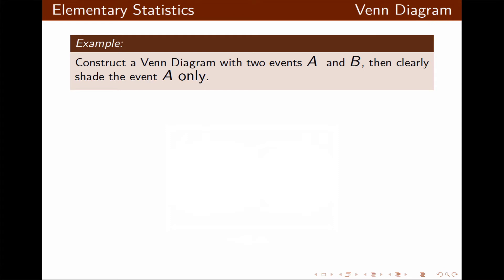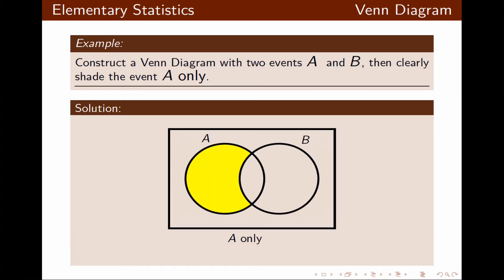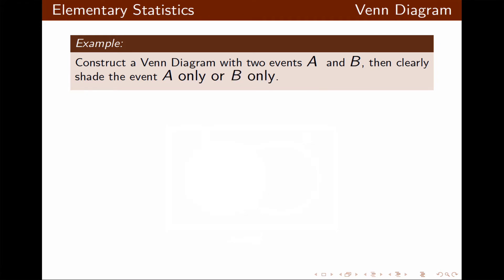Now let's construct a Venn diagram with two events A and B and shade only event A. Event A only means you have to be inside of A but not inside of any other event. That's why only part of A is shaded — the part of A that also belongs to B is not shaded, because the problem specifies event A only.